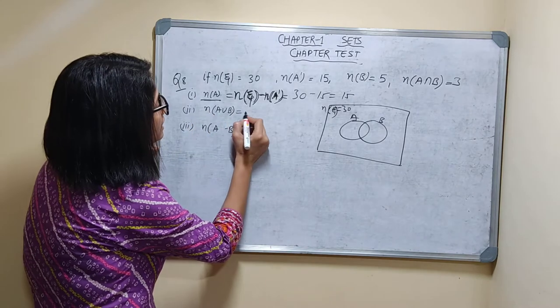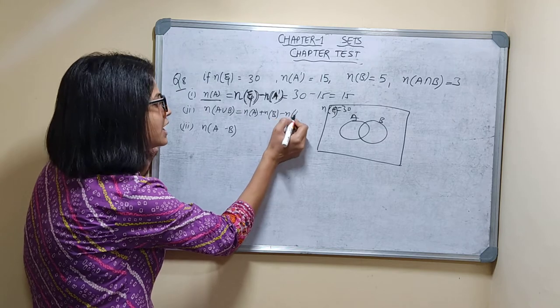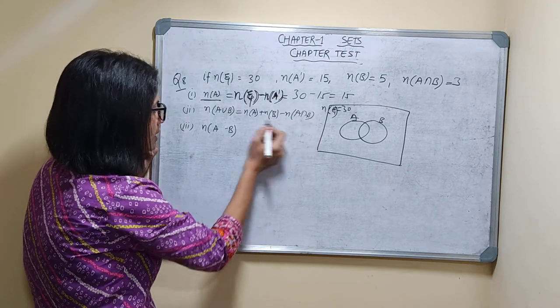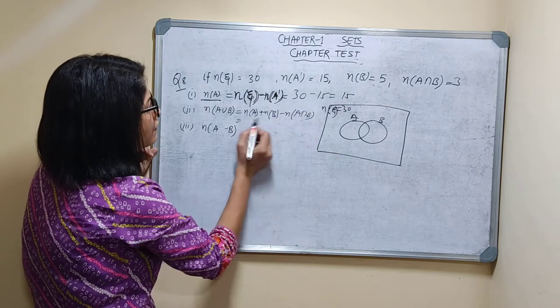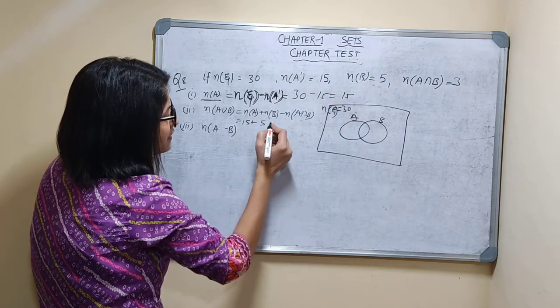N(A∪B), you know that is n(A) plus n(B) minus n(A∩B). N(A) is 15 you got. Plus n(B) is 5 minus n(A∩B) is what?